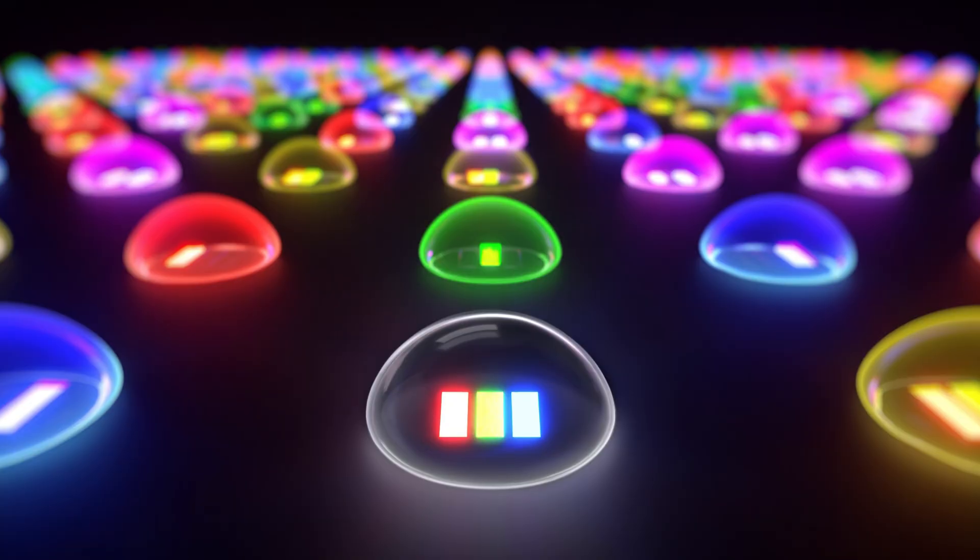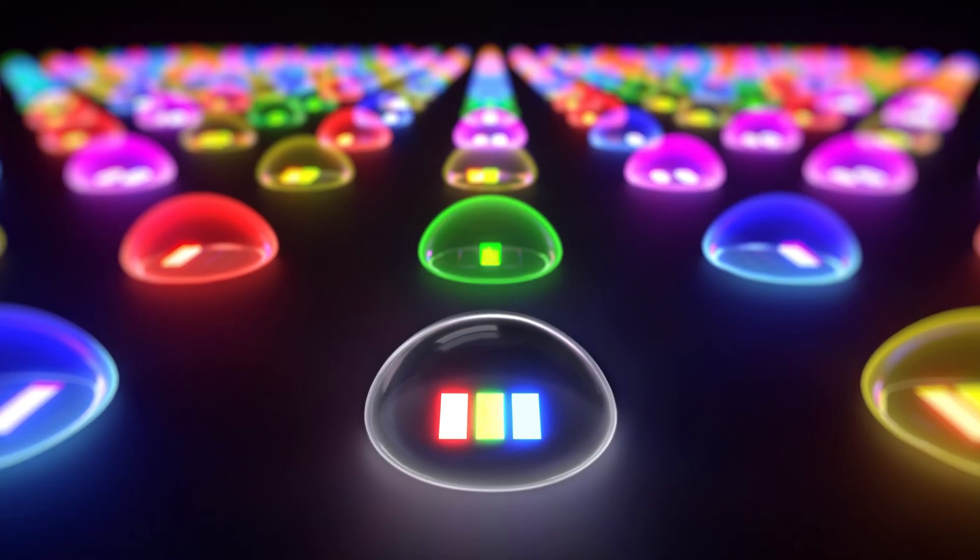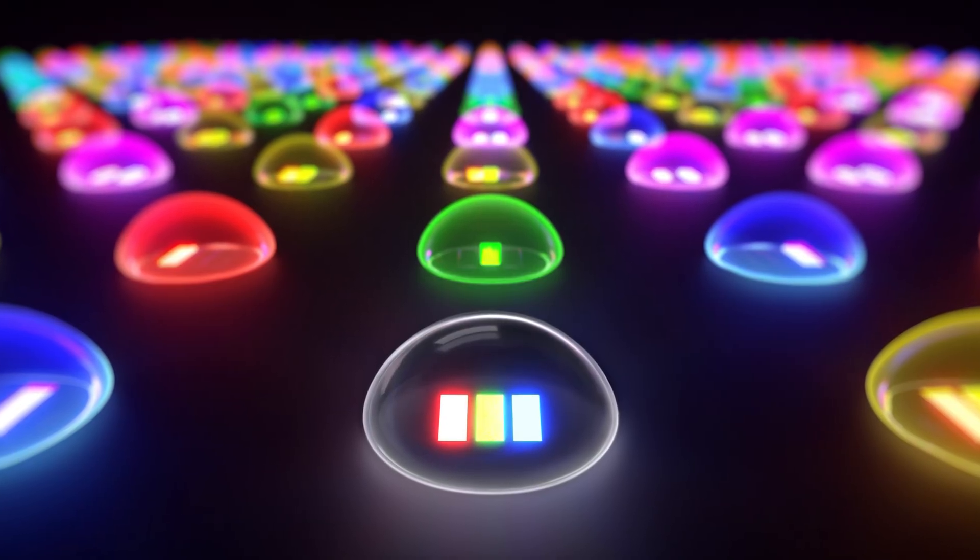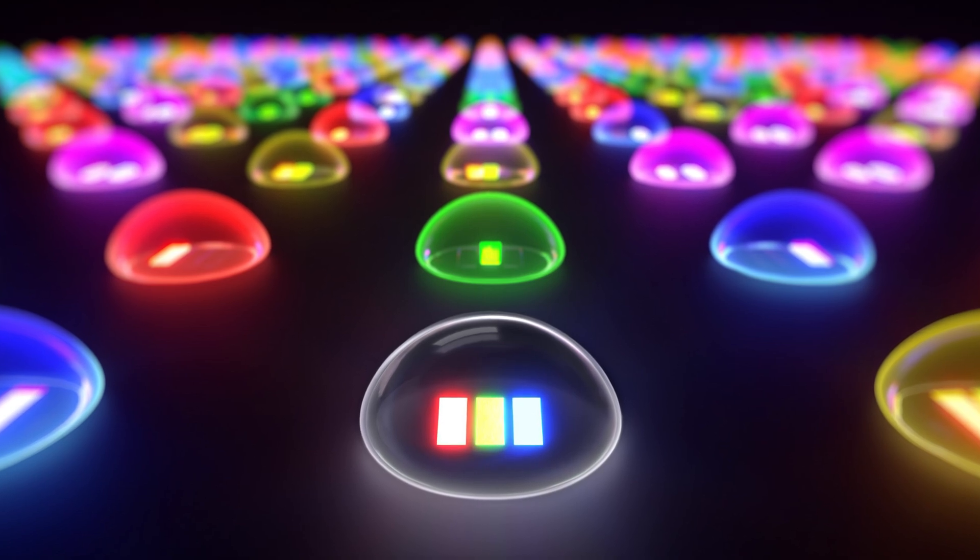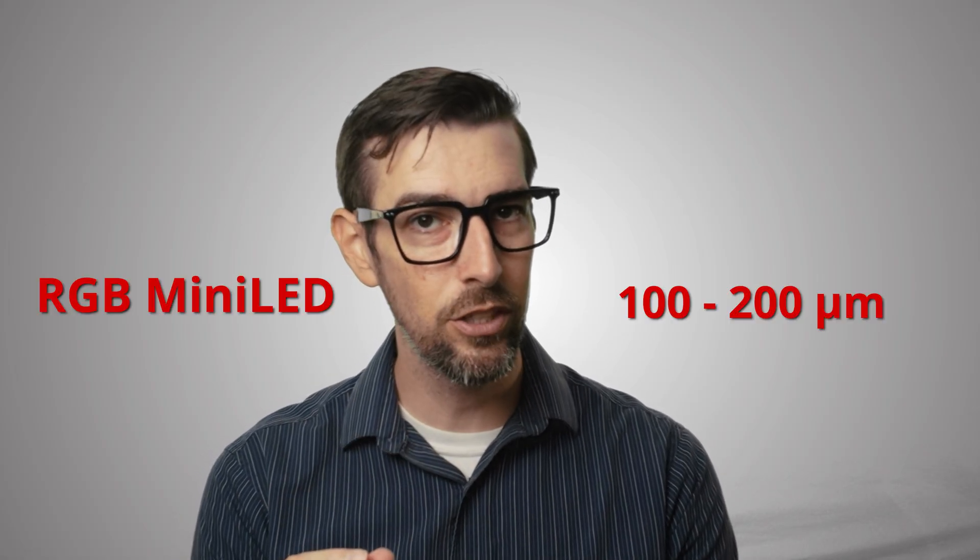RGB mini LED and micro RGB LED technology aim to elevate LCD performance by replacing traditional white or blue LED backlights with individually controlled red, green, and blue LEDs arranged in mini or micro scale arrays. Just as a reminder, RGB mini LED uses LEDs that measure between 100 and 200 micrometers, which means each LED is a distinct red, green, or blue light source, which allows for more precise color control and improved brightness compared to conventional backlighting systems.